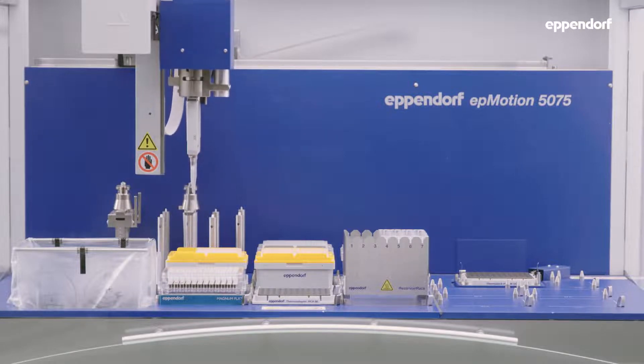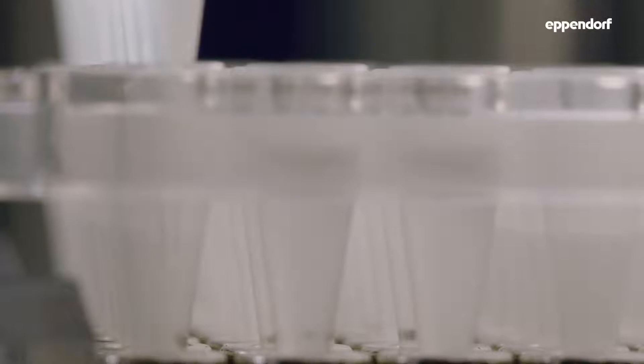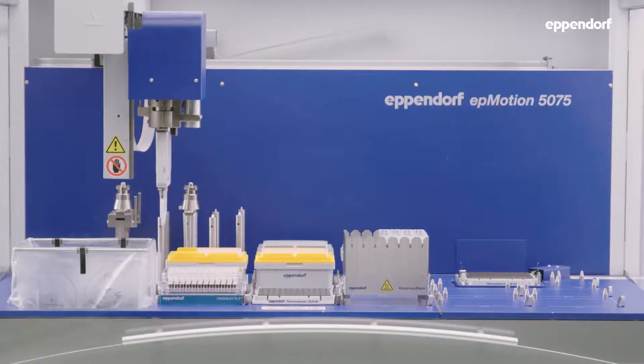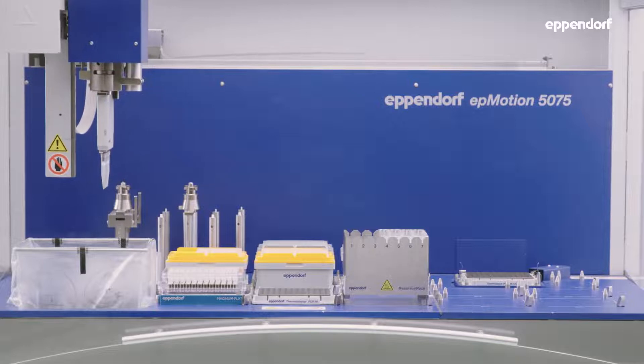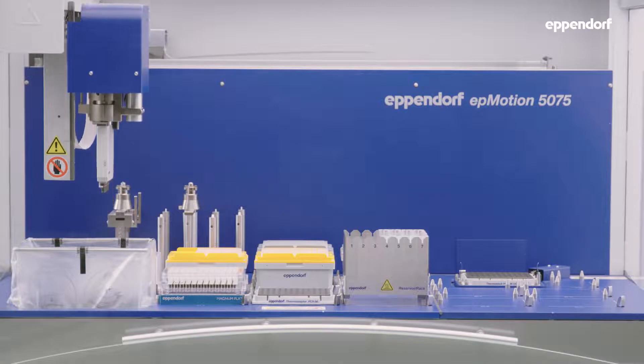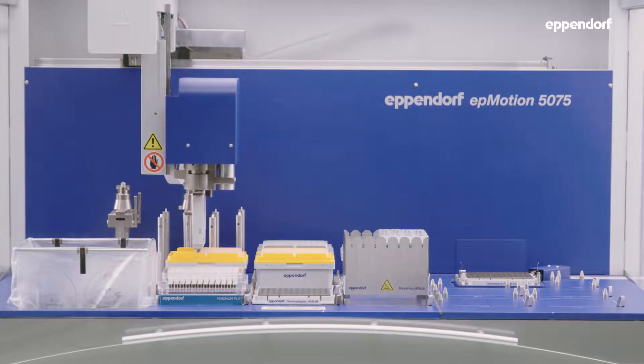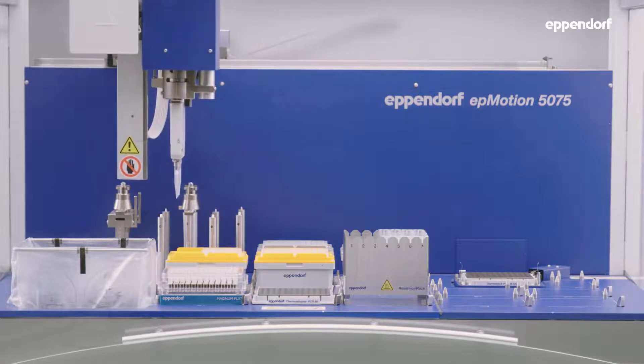In this step, good tip positioning is required to remove supernatant as carefully as possible from the beads. High quality NGS libraries can be generated with accurate supernatant removal for a purified DNA sample. New tips are used for each sample to avoid contamination.